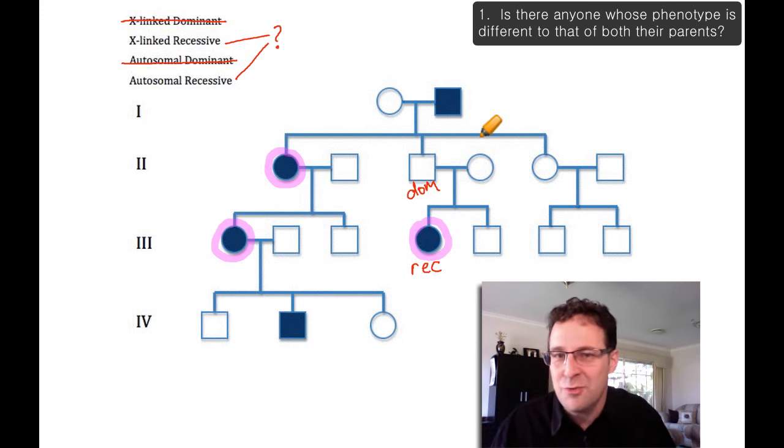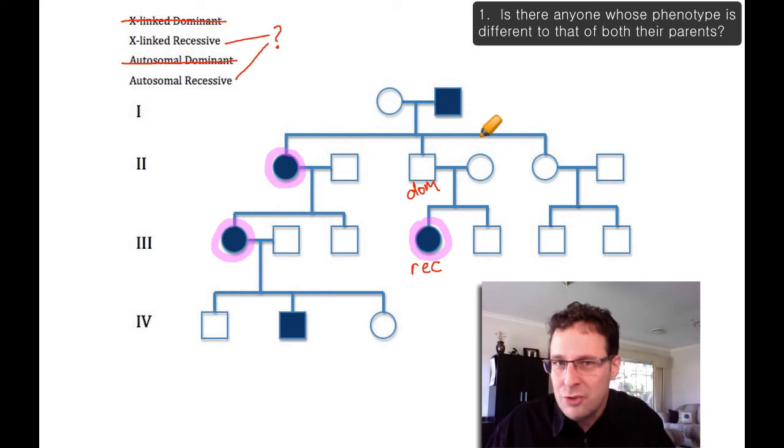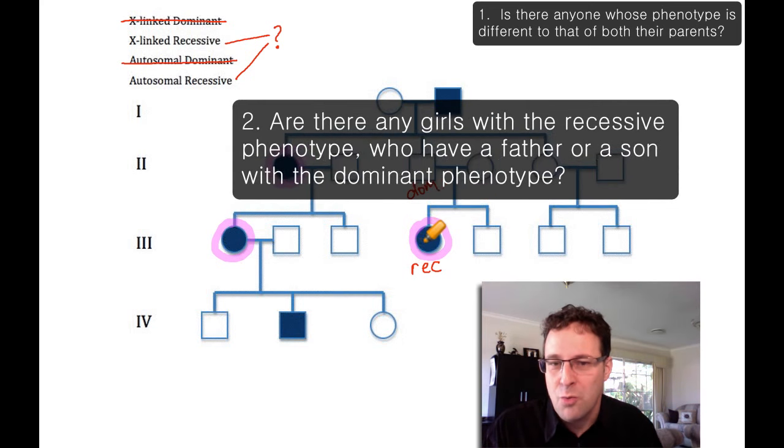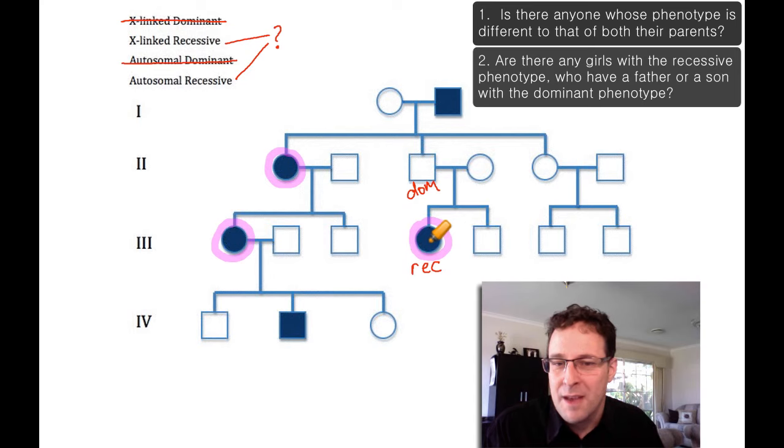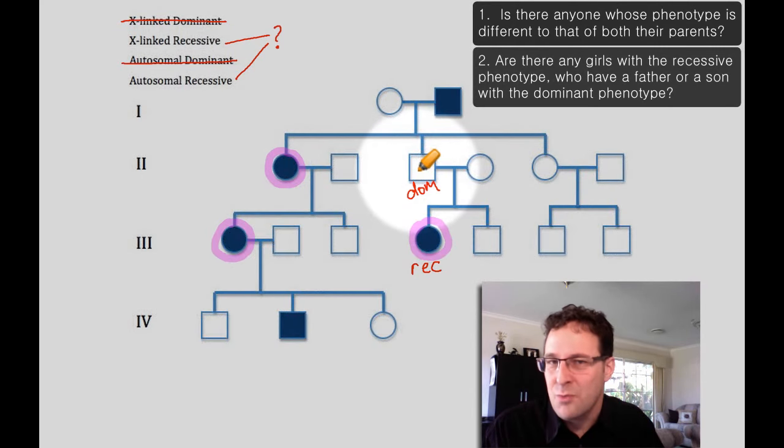And we ask ourselves our second question, which is, are there any girls who have the recessive phenotype that have a father or a son with the dominant phenotype? Let's have a look. Well, there's actually a number of them. This girl has a father with the dominant phenotype. This girl has a son with the dominant phenotype. This girl has both a father with the dominant phenotype and a son with the dominant phenotype.